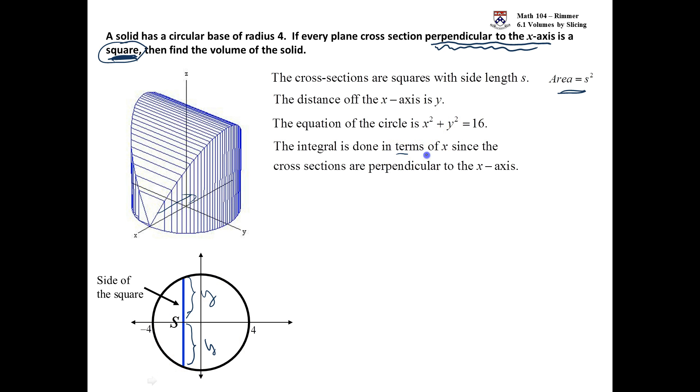Since the integral is done in terms of x, we're perpendicular to the x-axis. We take this equation, then we need to solve for y. So we subtract the x² over, and we take the square root. When we take the square root, we get plus or minus. The upper part of this circle is the positive square root, and the lower part of the circle is the negative square root.